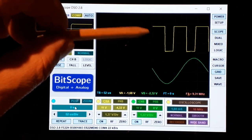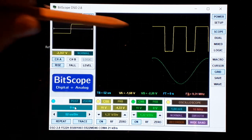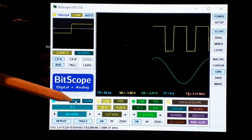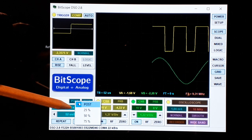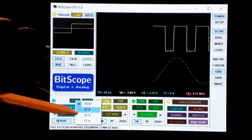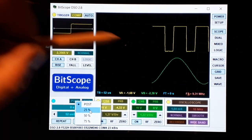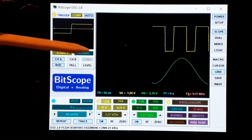But you could say okay I want to capture before the trigger happens, so then here in post you right click and say like I want the buffer, 25 percent of the buffer to be recorded before the trigger.